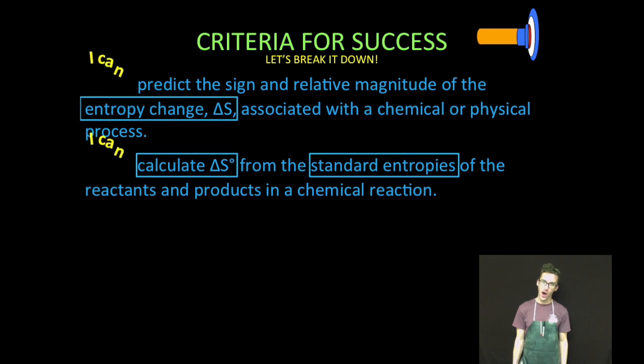Number one, we are going to predict the sign and relative magnitude of the entropy change, delta S, associated with a chemical or physical process. Number two, we are then going to calculate delta S from the standard entropies of the reactants and products in a chemical reaction.